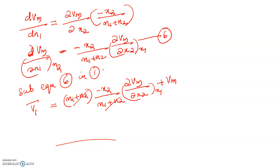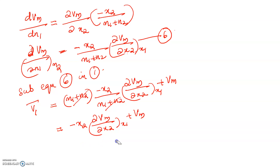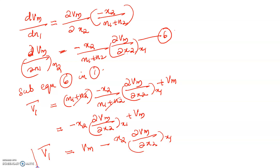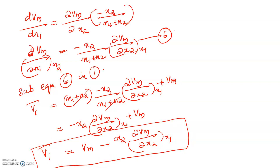Simplifying: (n₁ + n₂) cancels, so what remains is minus x₂ · ∂Vm/∂x₂ at constant x₁, plus Vm. Rewriting, V̄₁ = Vm − x₂ · (∂Vm/∂x₂) at constant x₁. This is the final equation we get.